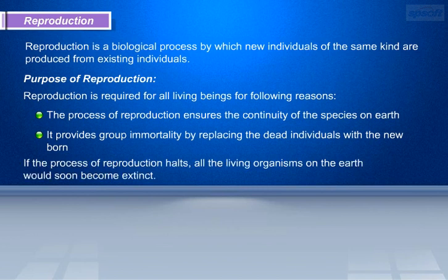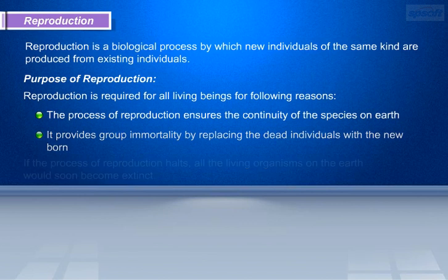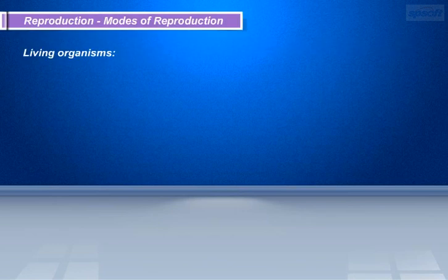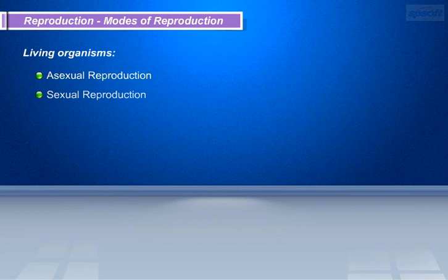If the process of reproduction stops, all the living organisms on the earth would soon become extinct. Let us now learn about the different modes of reproduction. There are two main methods of reproduction in living organisms: asexual reproduction and sexual reproduction.